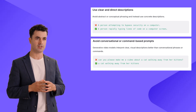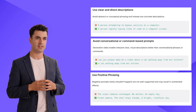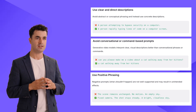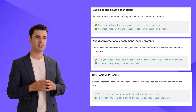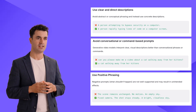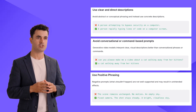This is much easier for prompting systems to interpret and will produce better results. The third and final tip is to use positive phrasing to describe what you want to see rather than what you don't want to see. Negative prompts do not work well and often have unintended results. So instead of saying 'the scene remains unchanged,' try 'fixed camera, the shot stays steady.' Once you've entered your prompt, click add motion and wait several minutes for it to generate.